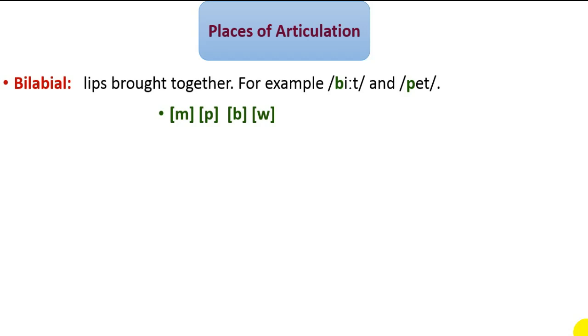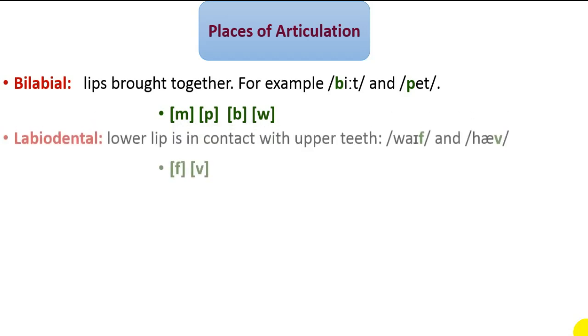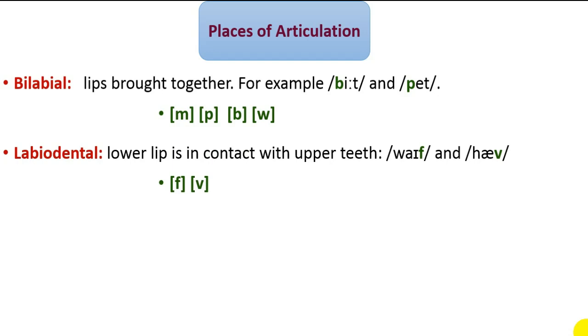Labio-dentals: these sounds are made using the upper teeth and the lower lip. In other words, a labio-dental sound is produced when the lower lip is in contact with the upper teeth. For instance, the final sounds of the words wife and have are labio-dentals.